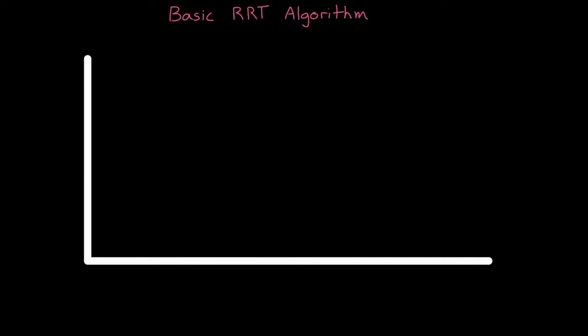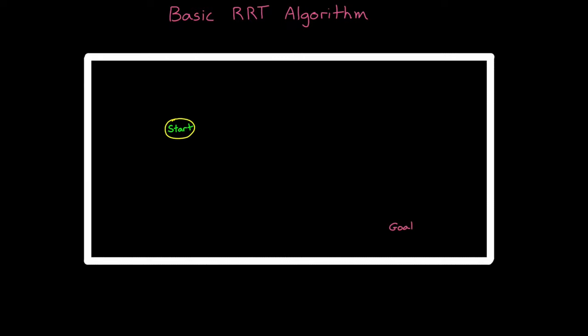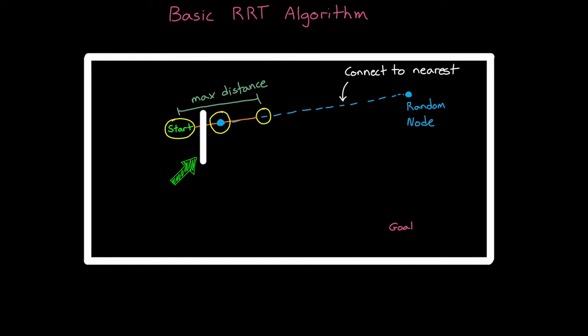Let's go into how the basic RRT algorithm works. From the starting node, we need to place a new node in our tree. RRT does this by randomly selecting a node anywhere in the state space. Once we have this random node, we want to connect it to the nearest node in our tree. But we don't want to place it too far away, because the chance of the path crossing an obstacle, or just traveling too far in the wrong direction, is greater with a longer edge. So we specify a maximum distance that the new node can be away from the nearest node.